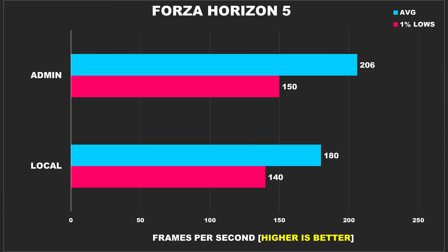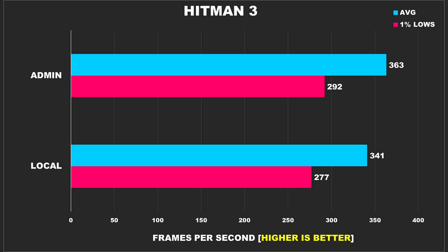Forza Horizon 5 provides our largest performance uplift at 14% for the average FPS and 7% for the 1% lows. While the performance was already stellar to begin with, this kind of uplift is still nice to see — though you'll have to decide if that extra performance is worth running a vulnerable account. For a racing game, I doubt many will. Hitman 3 also had stellar performance already, but the admin account still nets a 6% gain for the average FPS and 5% for the 1% lows.